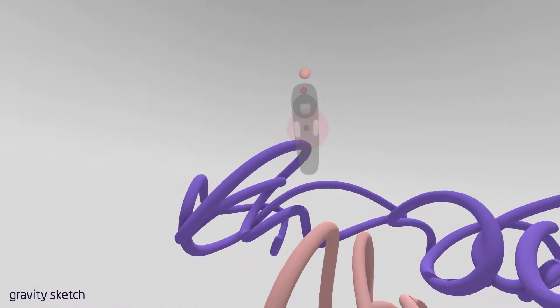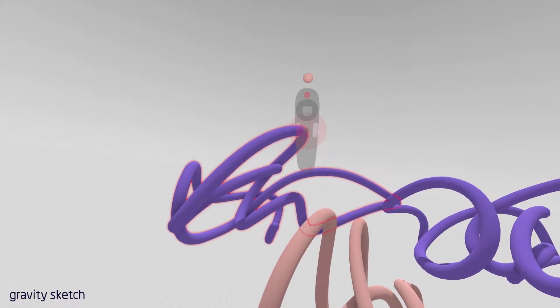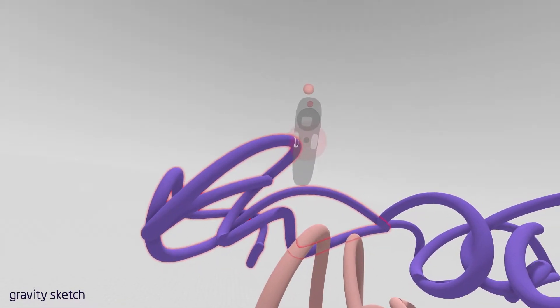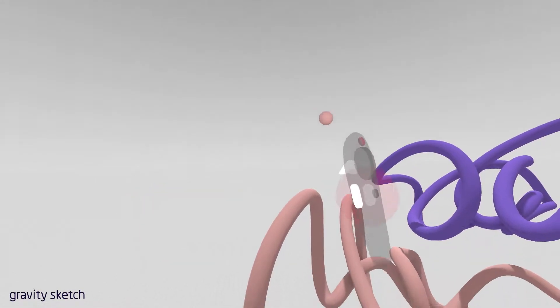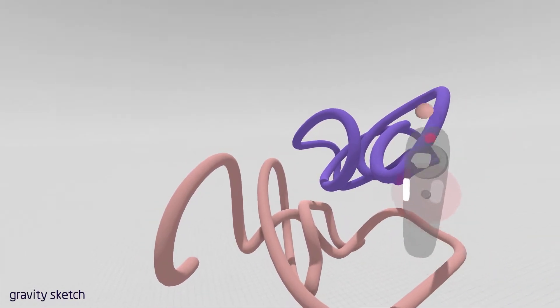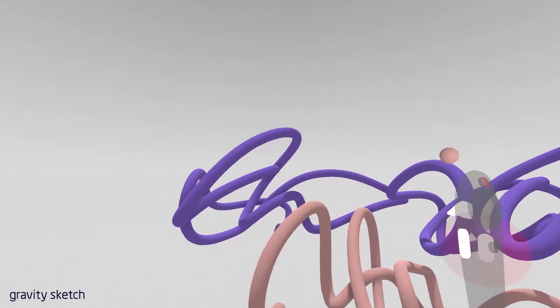To delete a stroke, intersect the stroke, grab the stroke, and then push that little red button up top while you're grabbing and you'll delete the stroke. If you just push that button independently, it works as an undo feature.